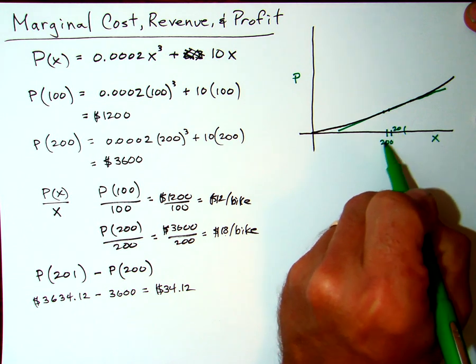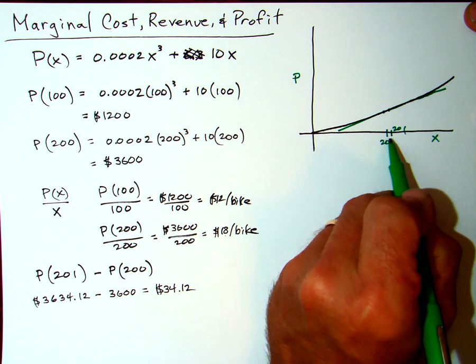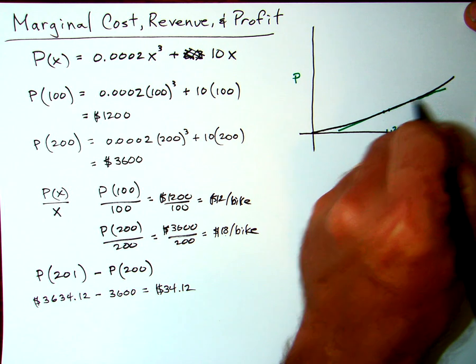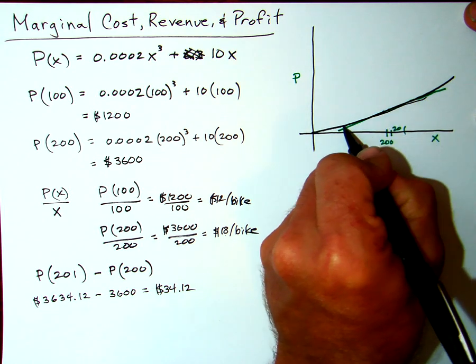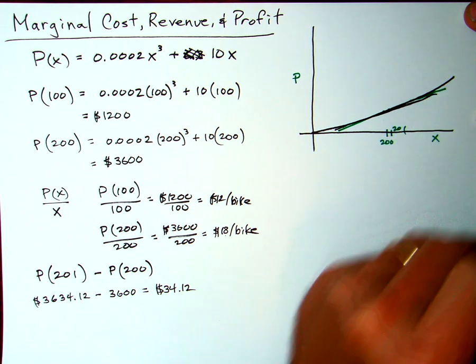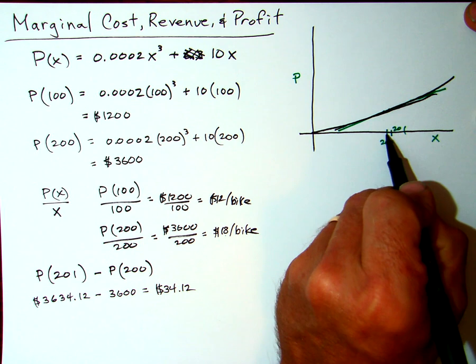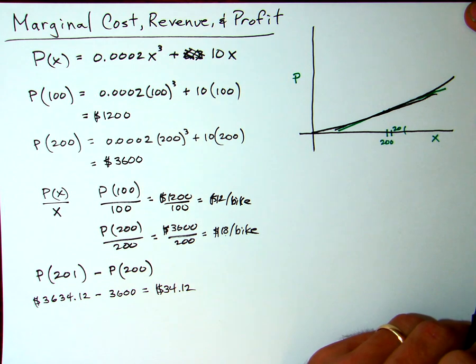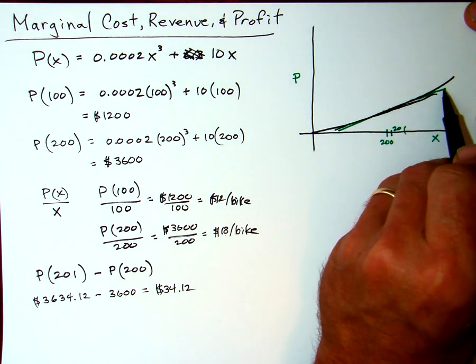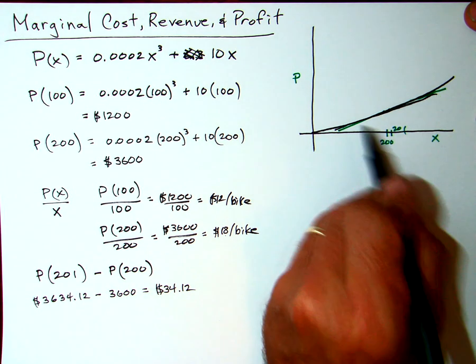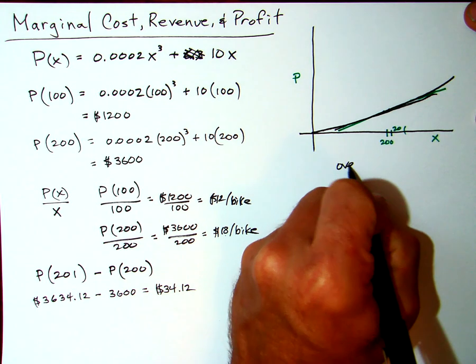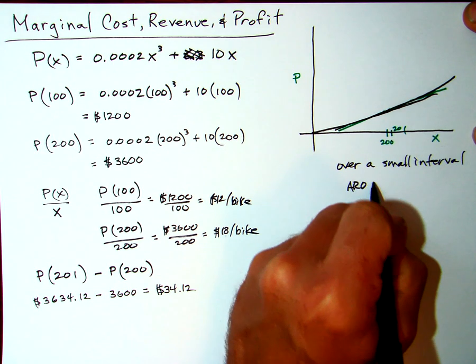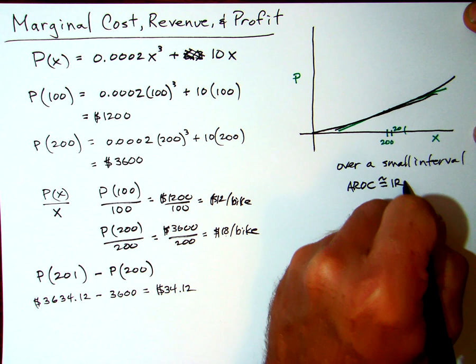That would give me basically the average profit from 200 to 201. But notice if I put in right at 200 a tangent line, something like this, it's hard to distinguish these two lines. And that's the point—if you take the average rate of change over a very small interval, then it's about the same as the instantaneous rate of change. The slope of the secant line gives me the average rate of change. The slope of the tangent line gives me the instantaneous rate of change. So over a small interval, the average rate of change is approximately the same thing as the instantaneous rate of change.